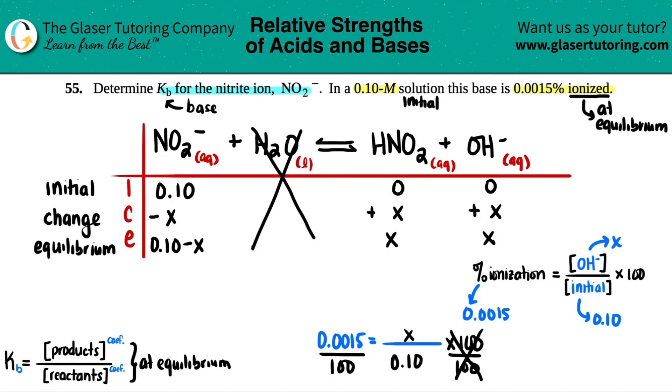0.0015 equals X divided by 0.10 times 100. Solve for X. So I get 1.5 times 10 to the negative 5th equals X over 0.10. Cross multiply, times by 0.1. And now we get an X value of 1.5 times 10 to the negative 6th.